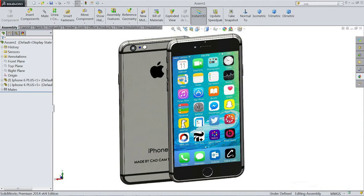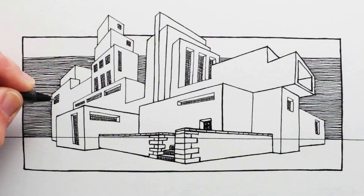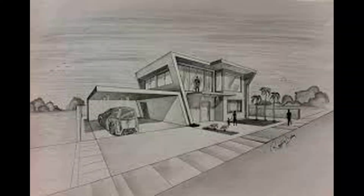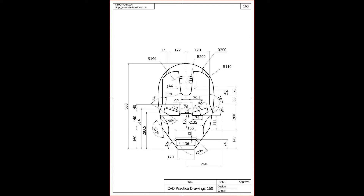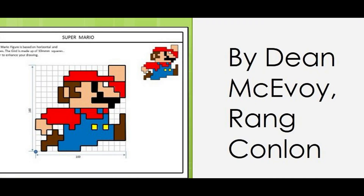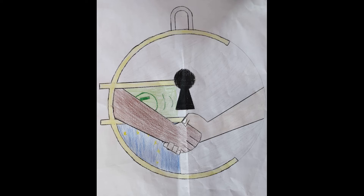In graphics we learn how to read and draw professional drawings like architects and engineers. Graphics teaches us how to design and draw to specific measurements, and we get to see and use the different stages that professionals use to create designs in the real world.